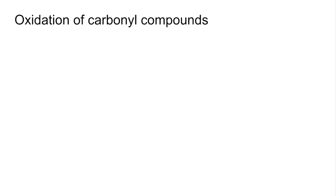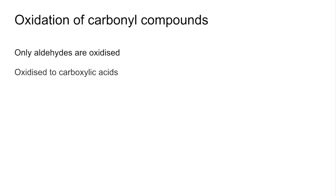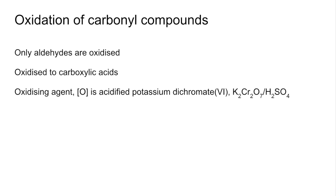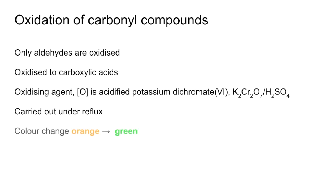We'll start by looking at the oxidation reactions of carbonyl compounds. Only aldehydes are oxidized — ketones aren't — and these are oxidized to carboxylic acids. The oxidizing agent, represented as [O], is acidified potassium dichromate(VI), with the acidified conditions coming from sulfuric acid. It's carried out under reflux and there's a color change of orange to green.